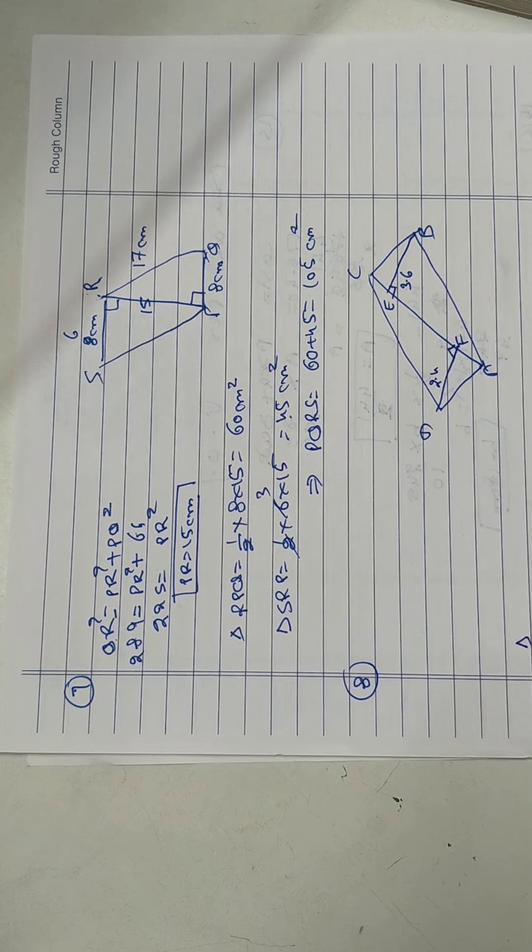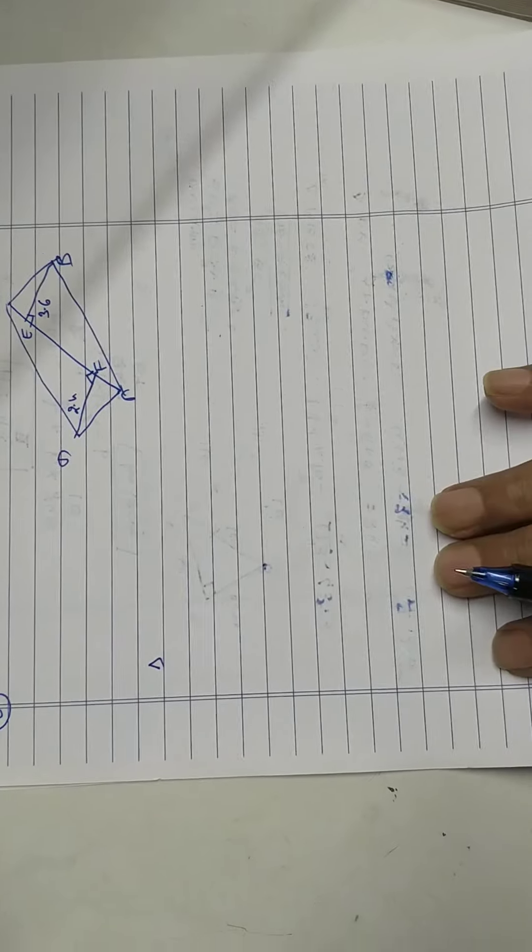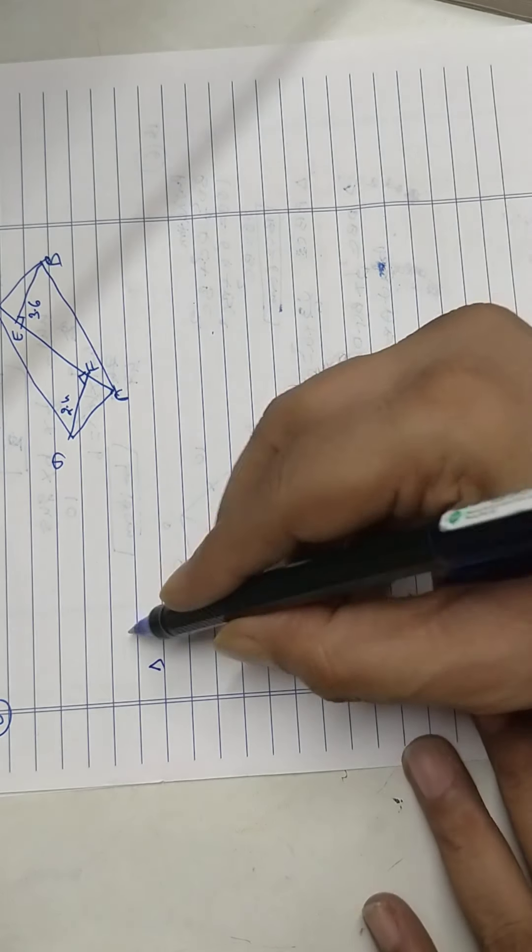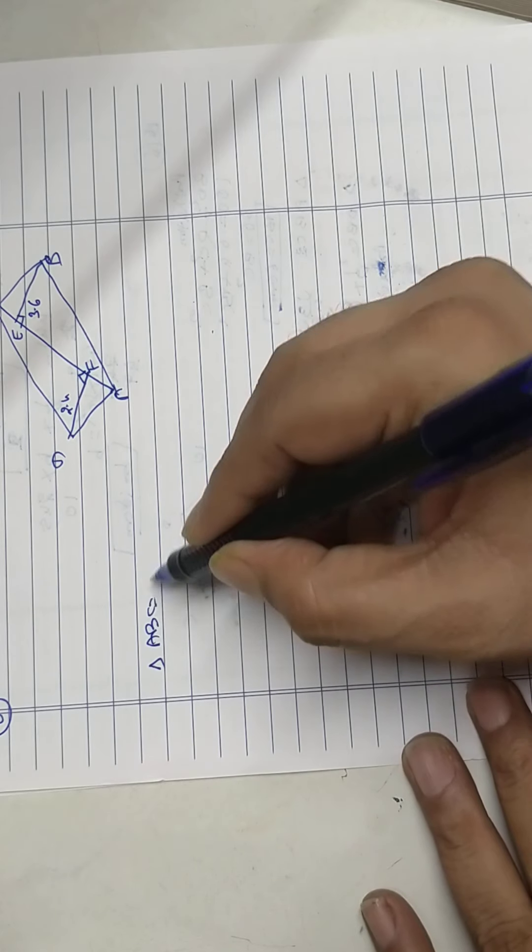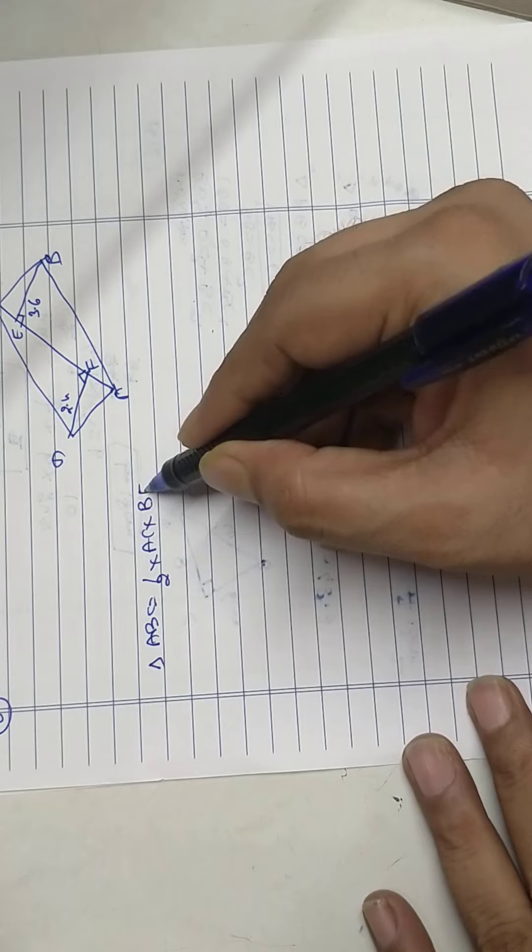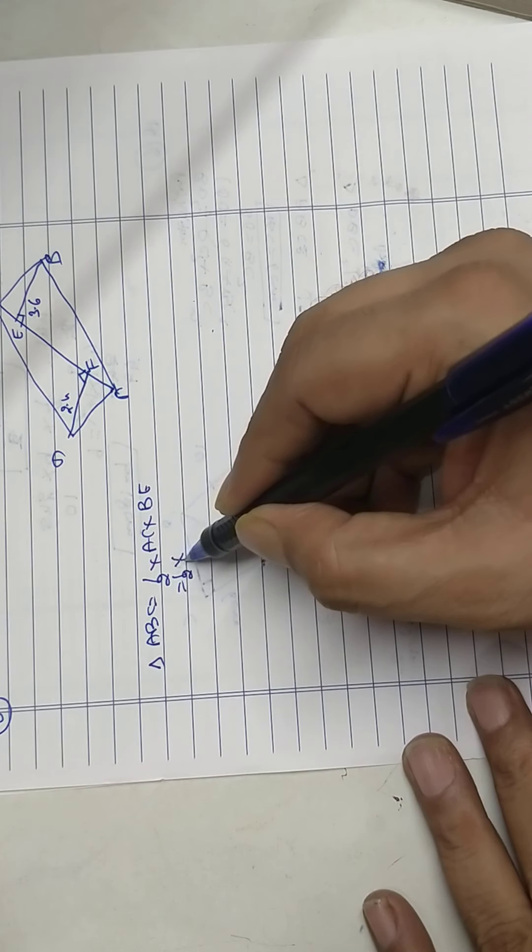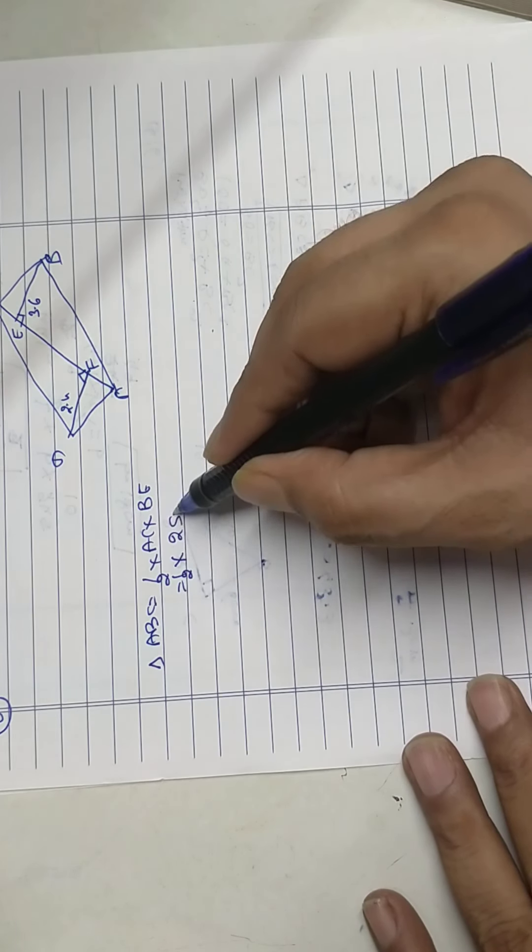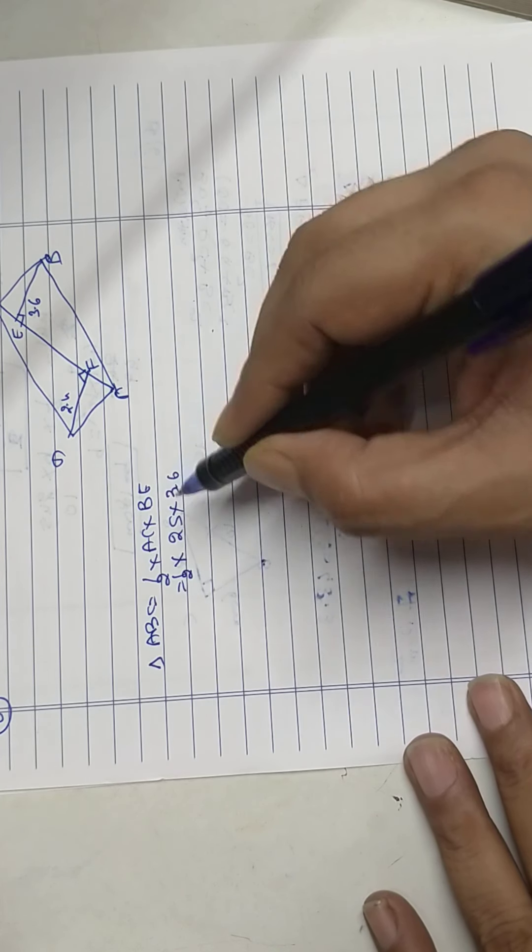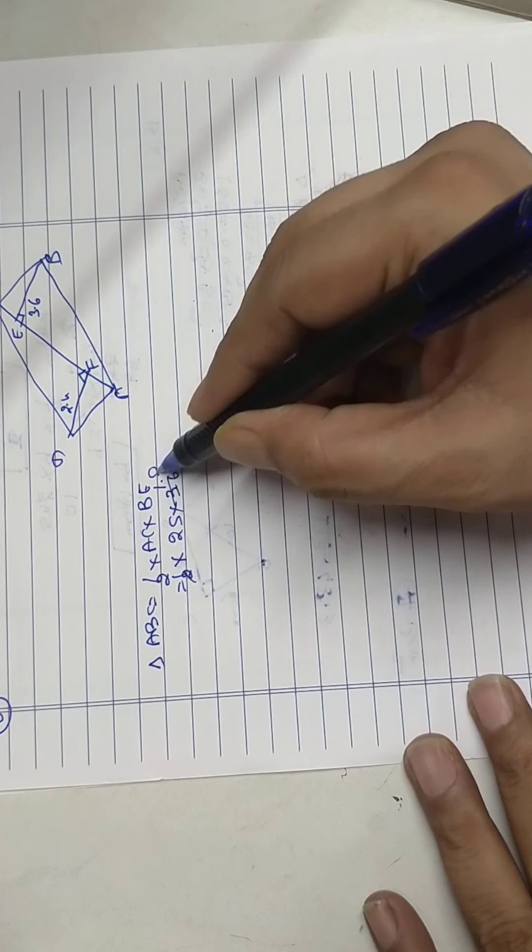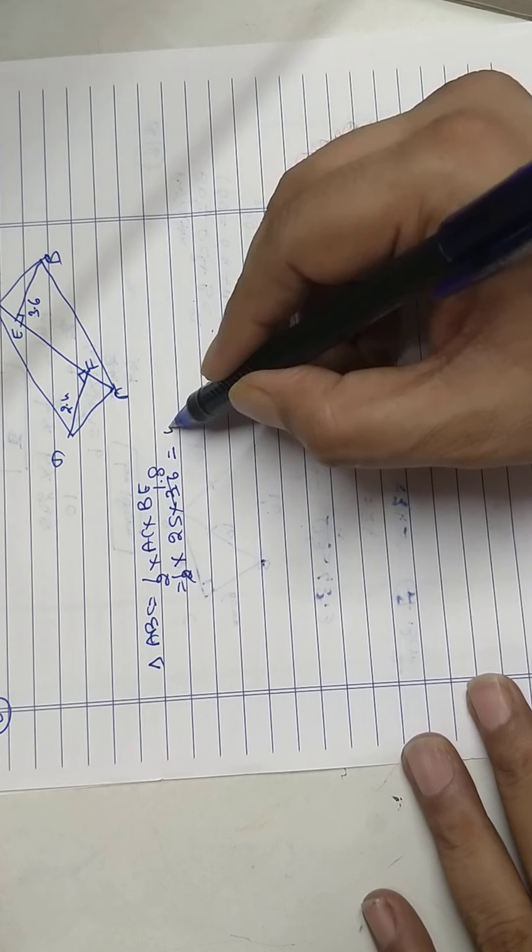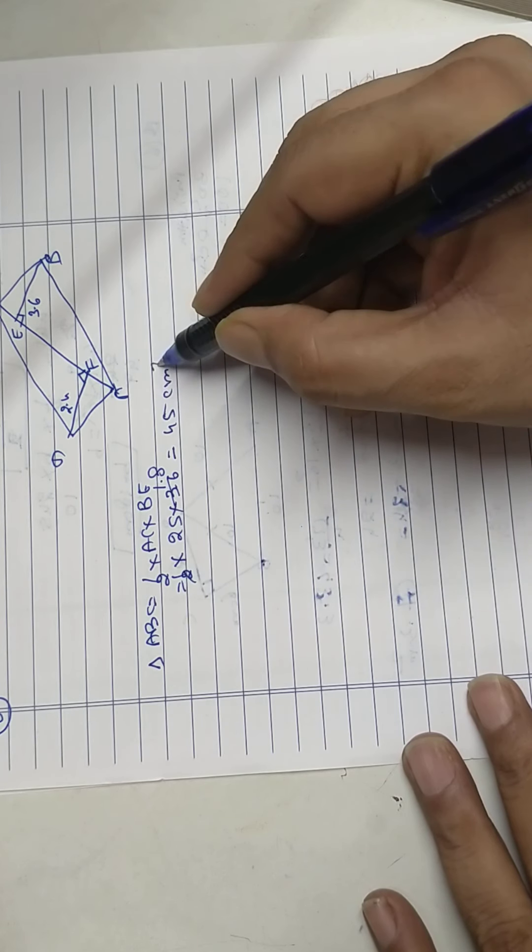Find first area of triangle ABC. Base is AC, height is BE. Base AC is given, 25. Height is 3.6. 1.8. Answer is 45 centimeter square.